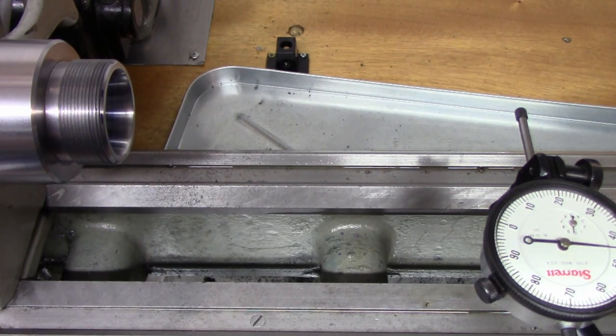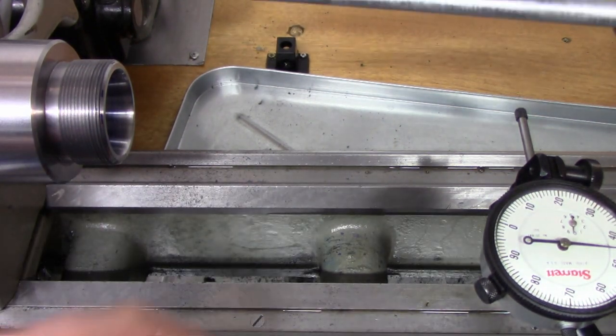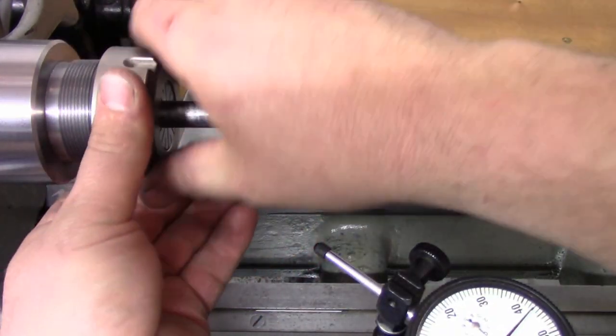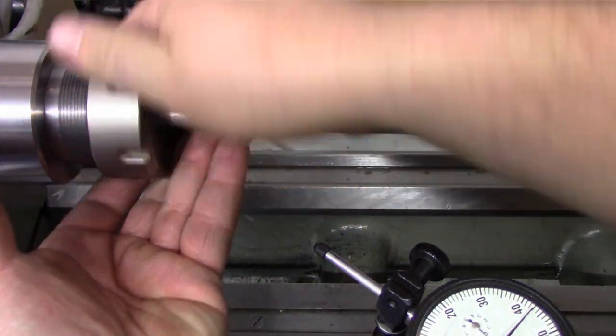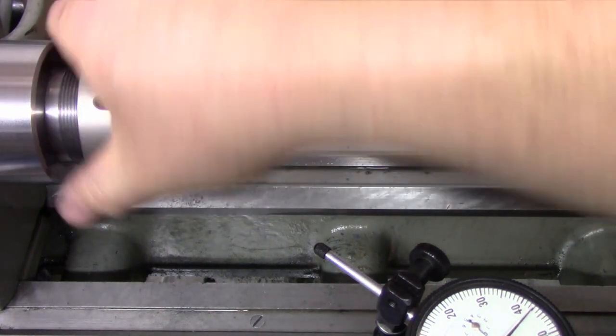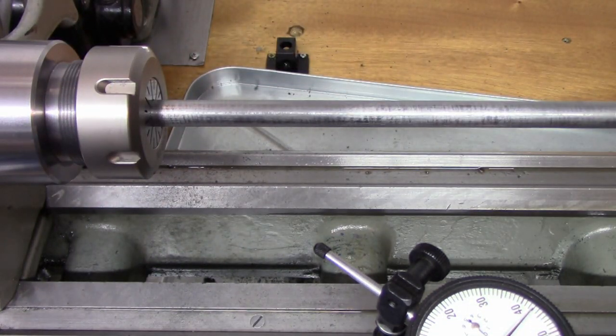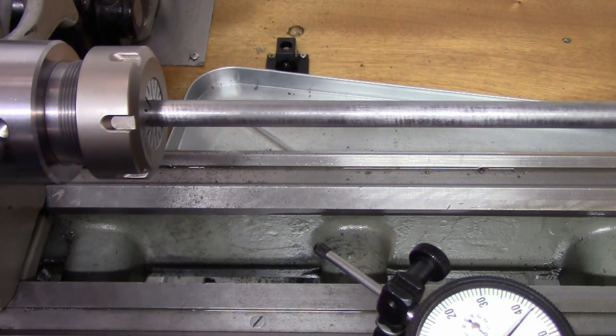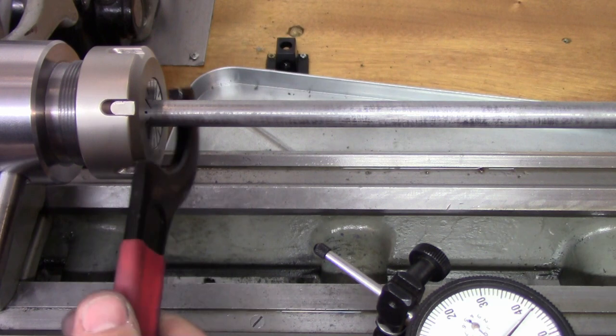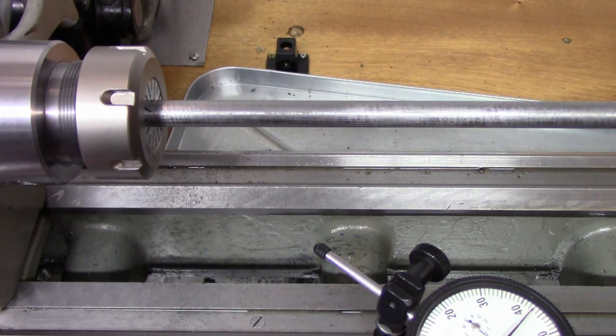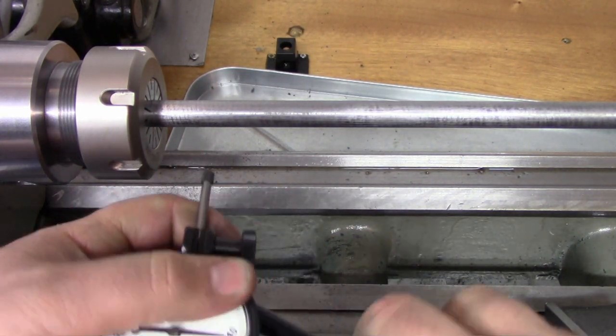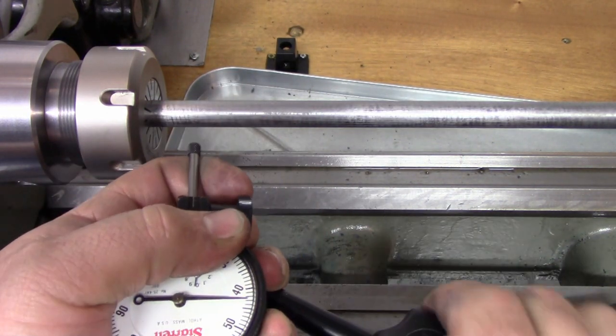Okay, so again I just massaged the taper a little bit here and checked it and rechecked it and we got a little bit better here. So start off with a piece of half inch stock. Okay, so we'll check it right up close again like we had it before.